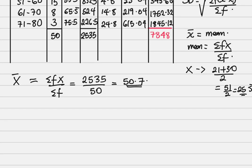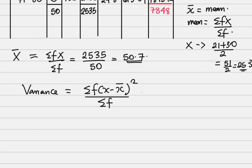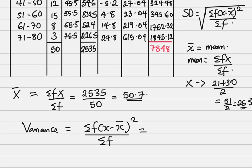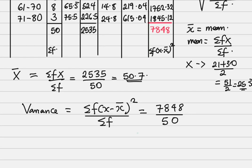Now let's find our variance. Variance equals summation of f times (x minus x̄) all squared, all over summation f. The numerator is the column for f times (x minus x̄) squared, and summation f is 50. So variance equals 7848 over 50, giving us 156.97, approximately 157.